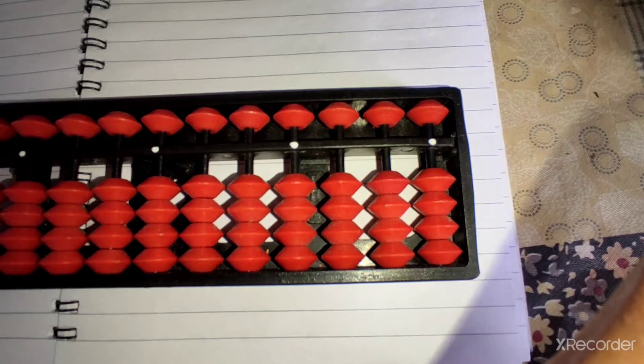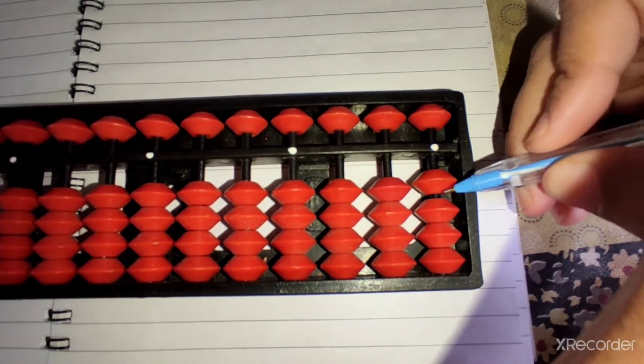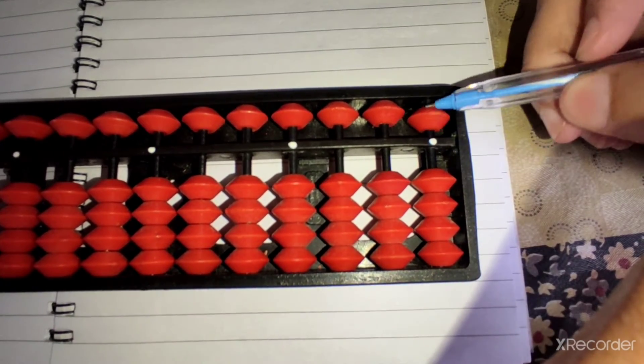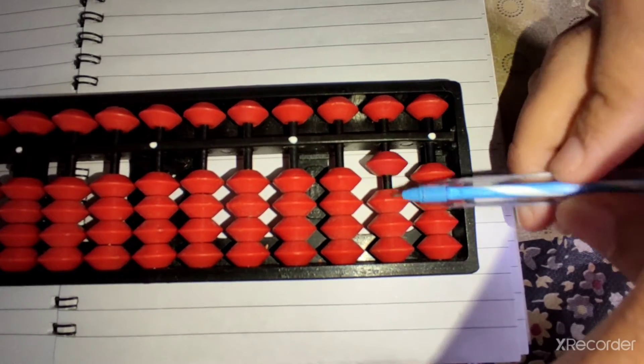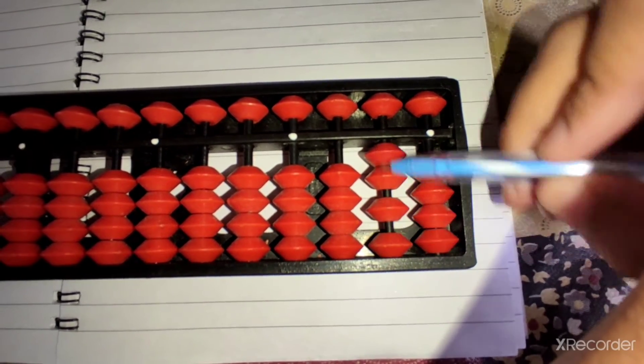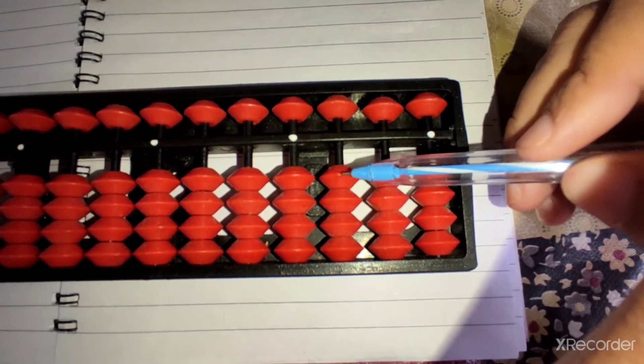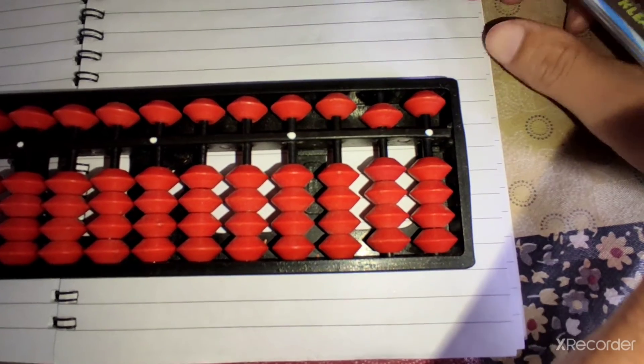In the 1 space rod, the lower beads' values are 1 each and the upper bead value is 5. In 10 space, the lower beads' values are 10 each and upper bead is 50. In 100 space, the lower beads' values are 100 each and upper is 500.